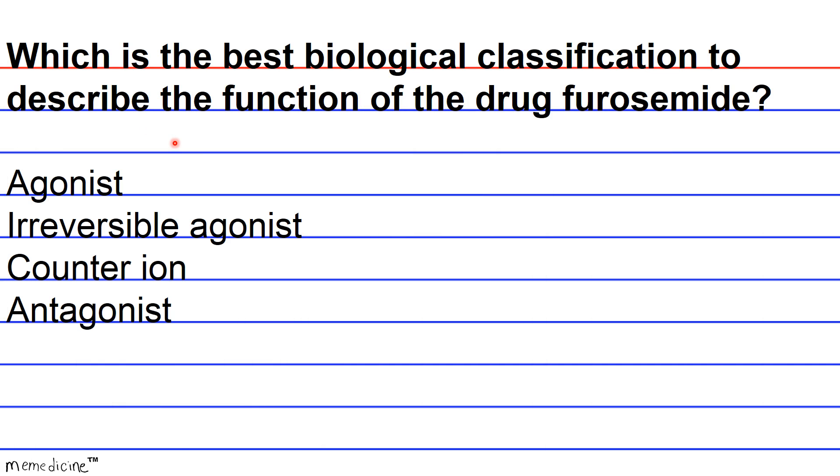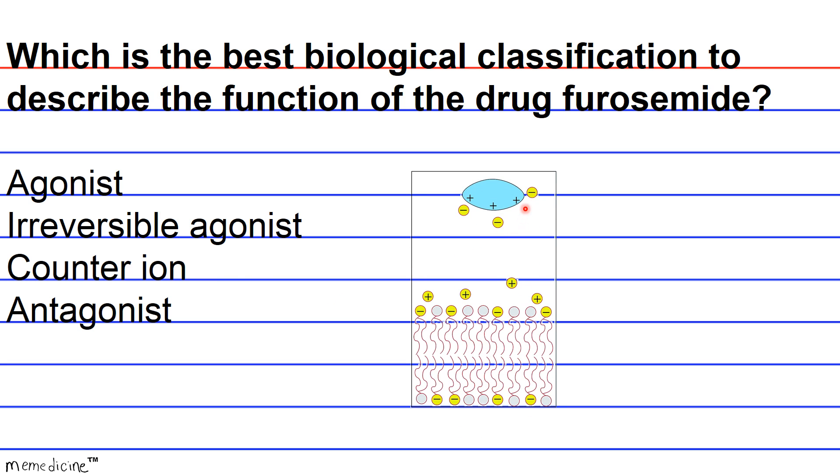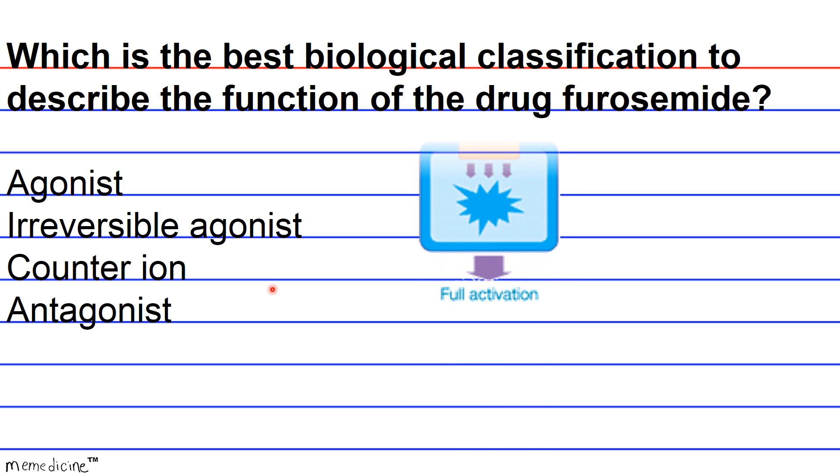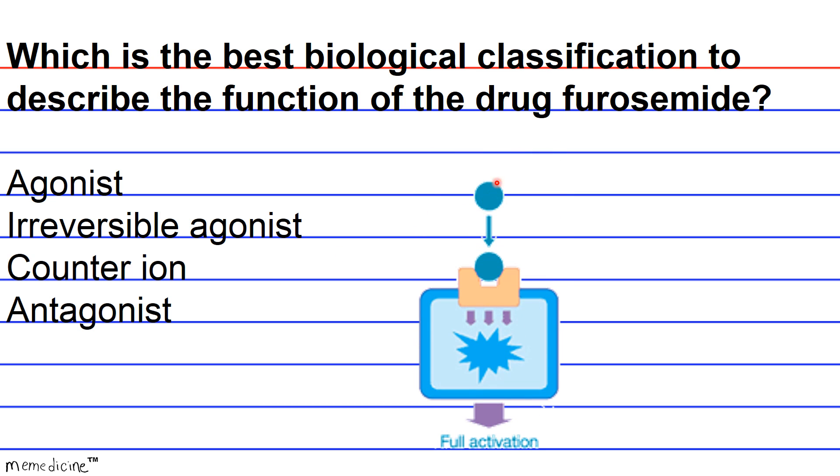Let's break this down by defining some of the answer choices. Starting with counter ions. Counter ions are chemical species that accompany other ions to maintain electrically neutral solutions. So furosemide is not used for this purpose, and so answer C is out. Agonists are molecules that bind to receptors and stimulate the receptor to produce a biological response. Here, furosemide is stopping all biological responses. So this is wrong as well. It's neither an irreversible agonist nor an agonist. By default, the correct answer choice is going to be answer choice D.